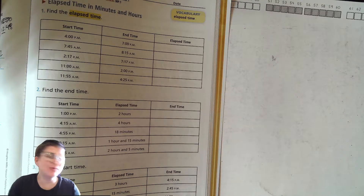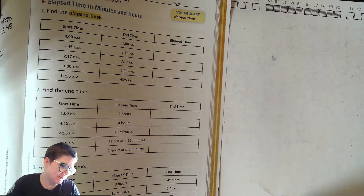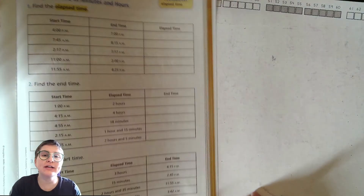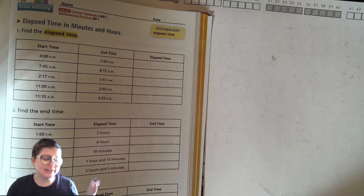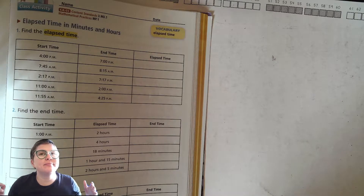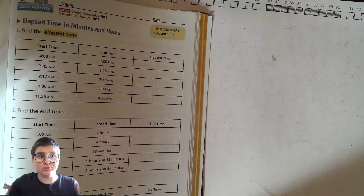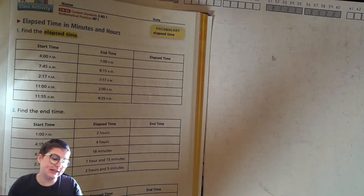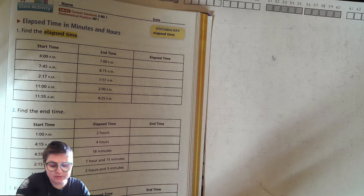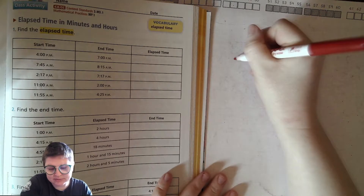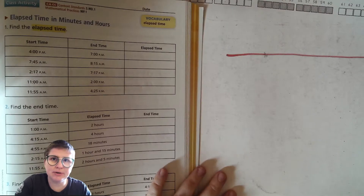Hello everybody, welcome back! Today we are doing Unit 3, Lesson 8, which is on page 193 of our book. This is for third graders. In today's activity we are practicing figuring out how much time is between two times — that's called elapsed time. It's the amount of time that has passed, and we're going to use a really cool technique: a number line. So grab your whiteboard and a marker.